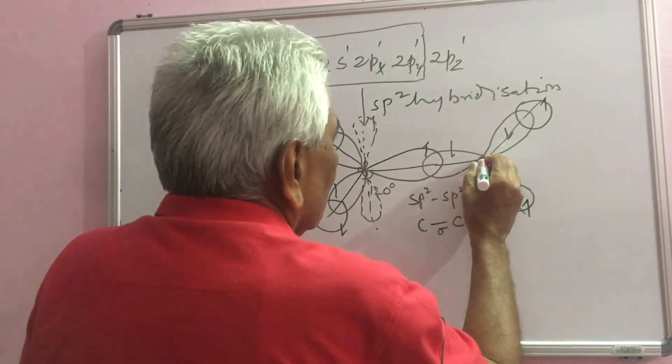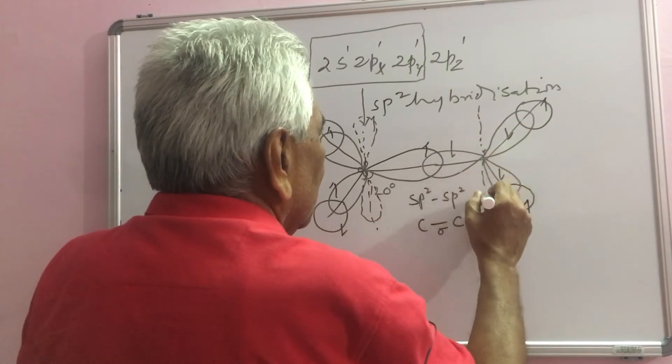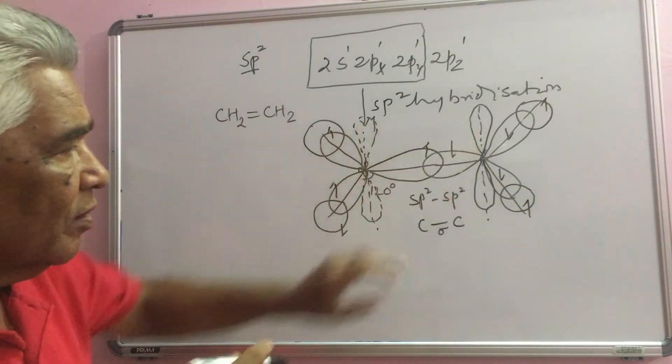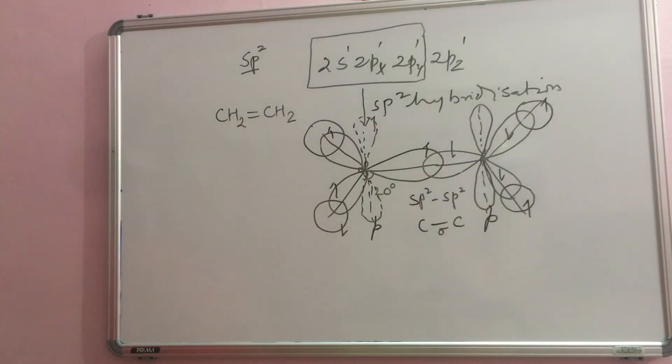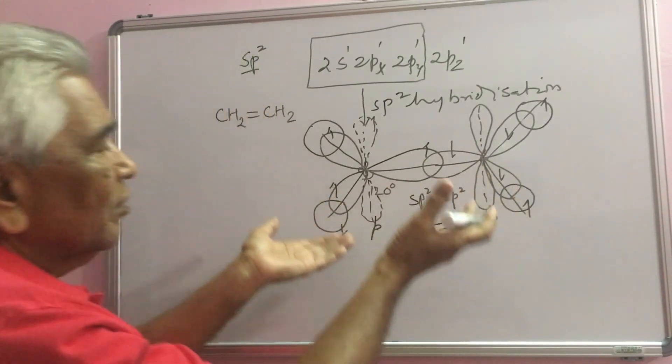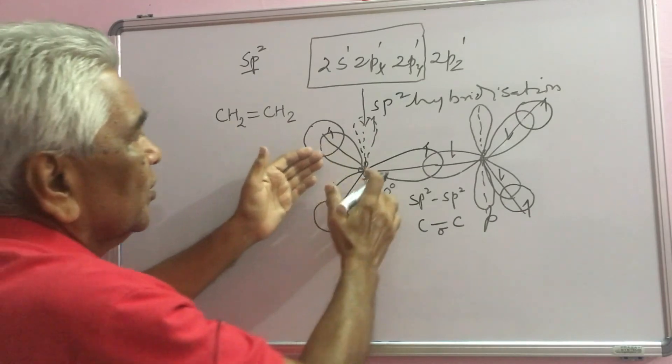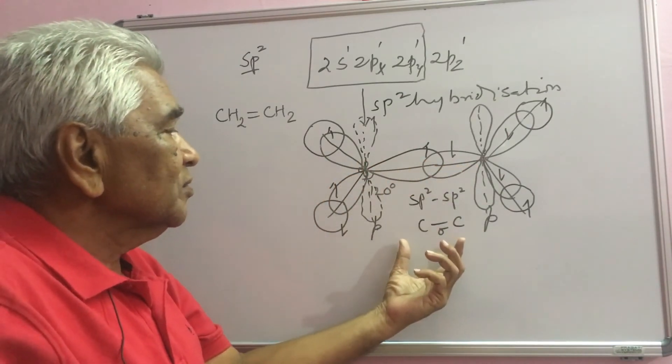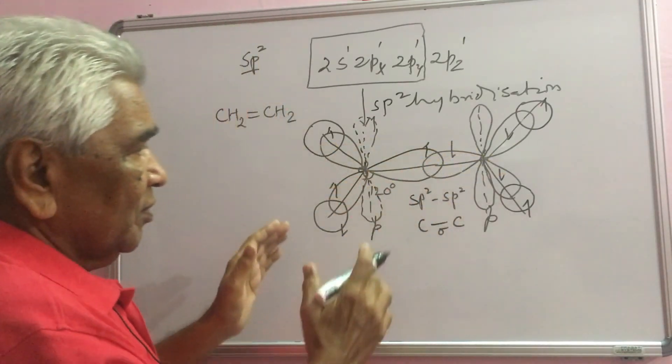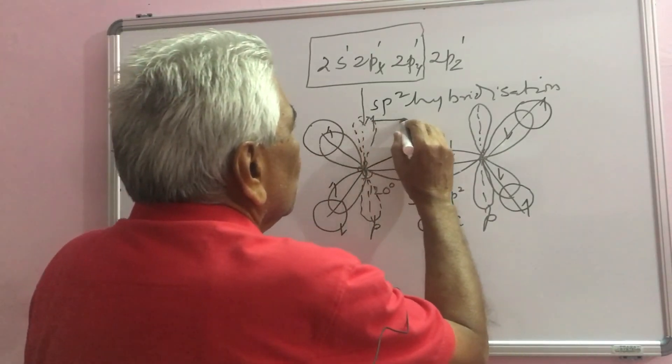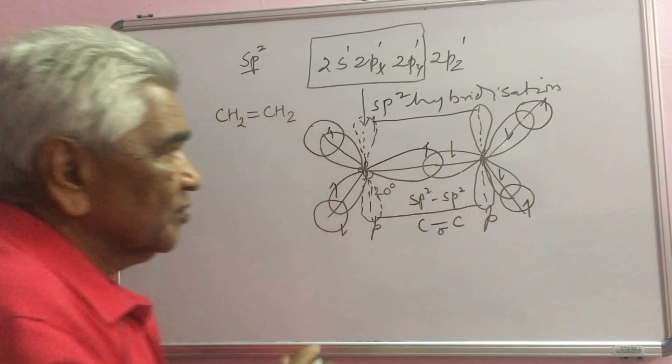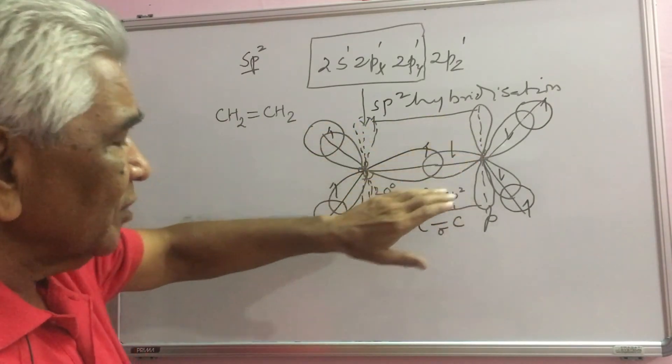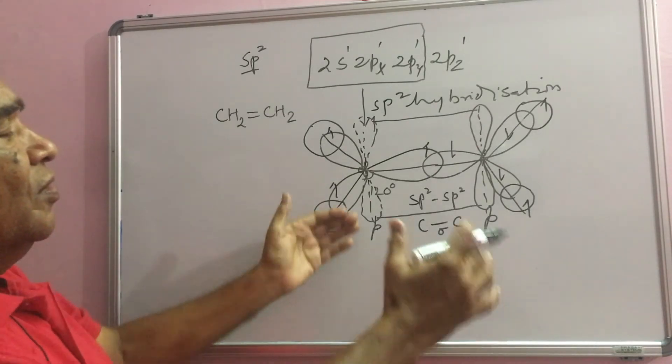We are left with a p orbital on each carbon. Two parallel p orbitals stand perpendicularly on the plane of these hydrogen atoms and carbon atoms. Whenever such two p orbitals are available on adjacent atoms parallelly, then overlap of these p orbitals takes place. They overlap and encompass the sigma bond.